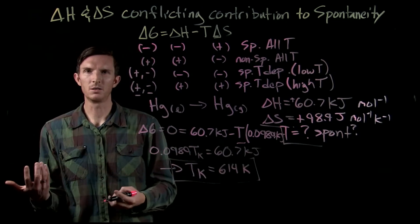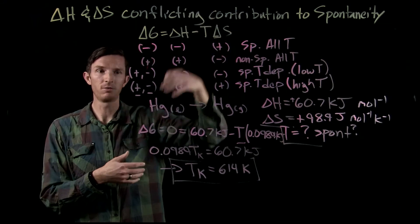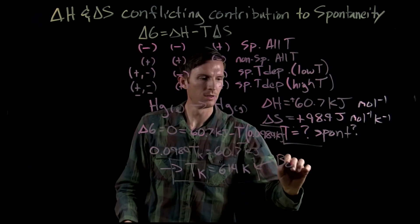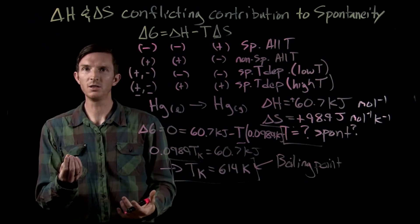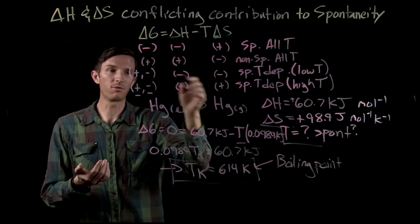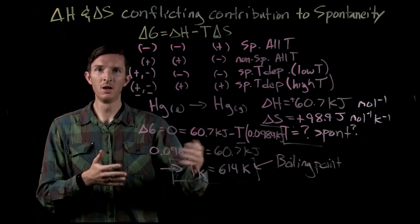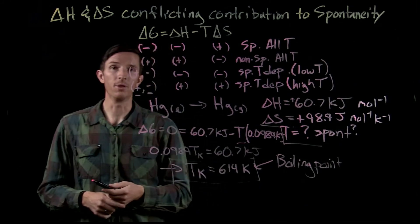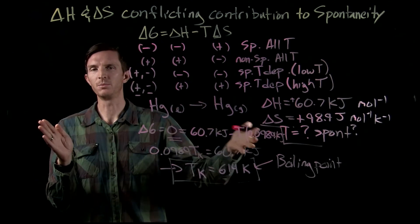So what does that mean for mercury? Below that temperature, it's non-spontaneous for mercury to go from liquid to gas. Above that temperature, it's spontaneous for mercury to go from liquid to gas. What would we call that temperature? That would be our boiling point — just like water at 80 degrees Celsius is non-spontaneous, below its boiling point, while water at 120 degrees Celsius is spontaneous for it to go from liquid to gas, with the boiling point at 100 degrees Celsius. So for these phase transitions, we can calculate the boiling point or melting point, knowing the enthalpy and entropy changes, by finding where the Gibbs free energy change equals zero.